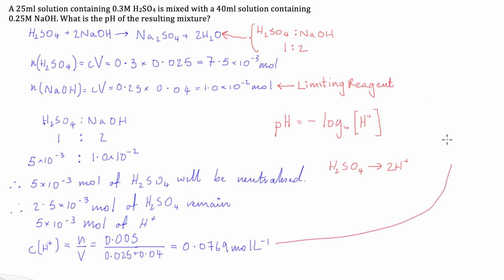So then finally we then just plug this concentration value into this formula so we're going to plug that in there and we're going to get the pH is equal to the negative log the base 10 of 0.0769 and that gives us a pH of 1.114.